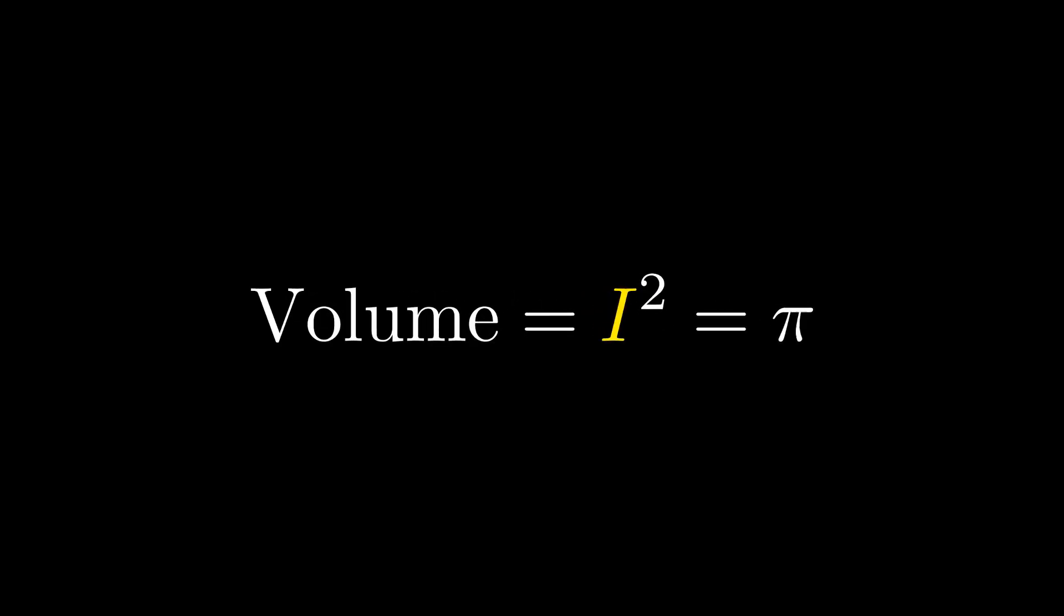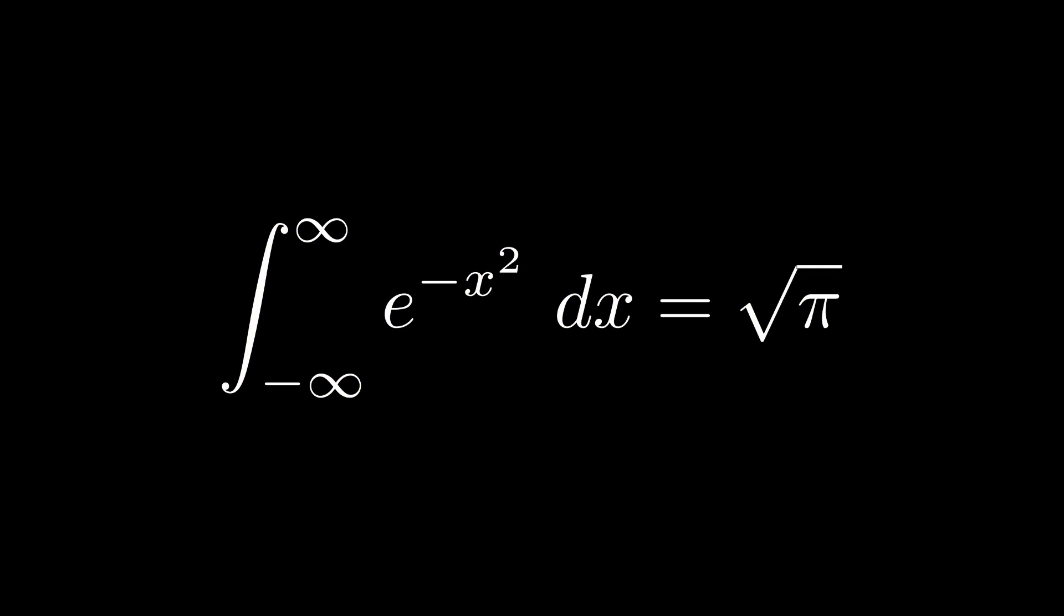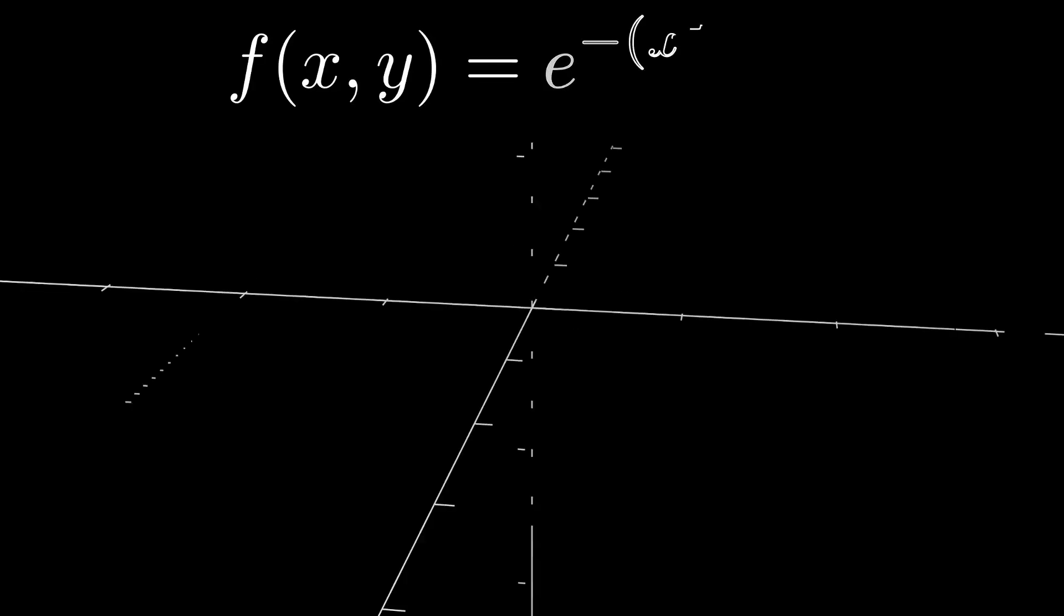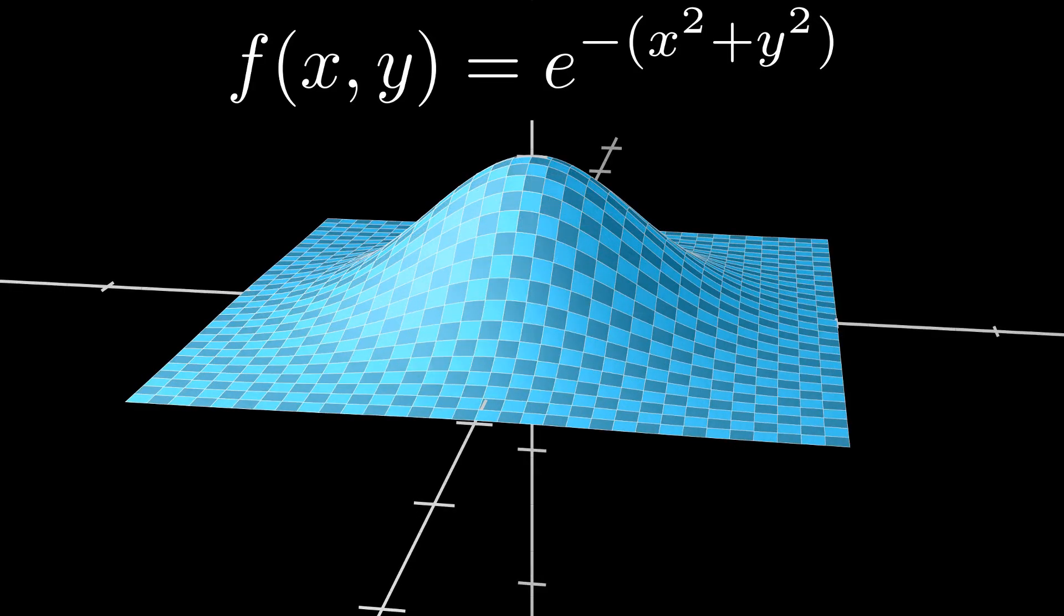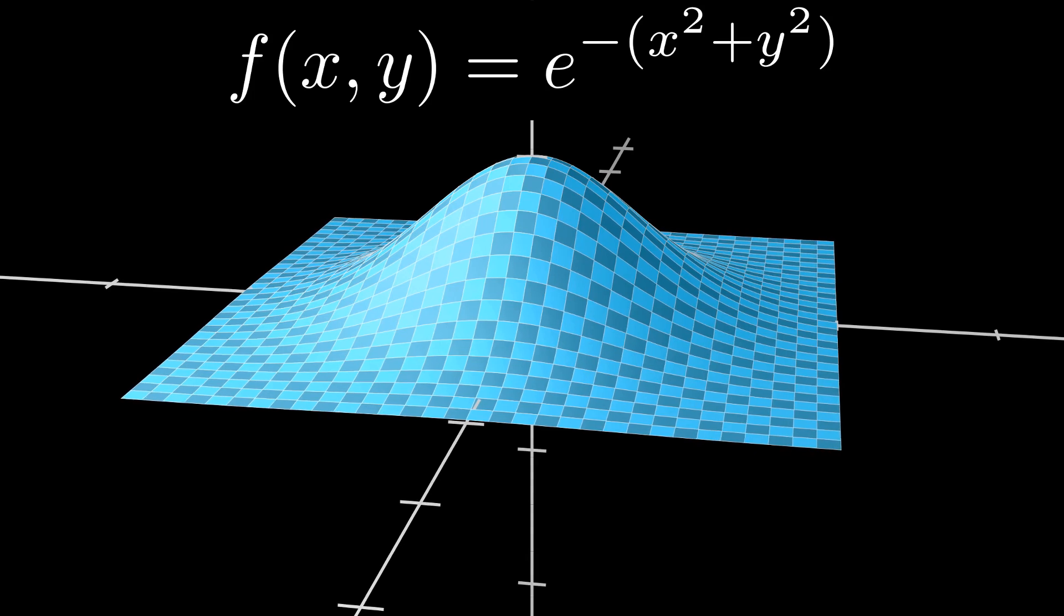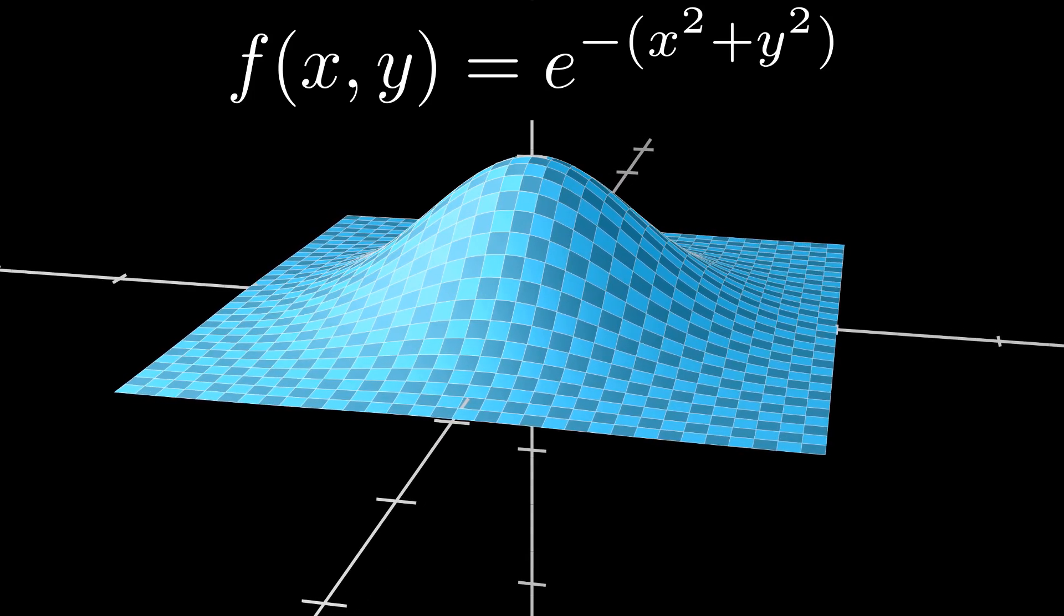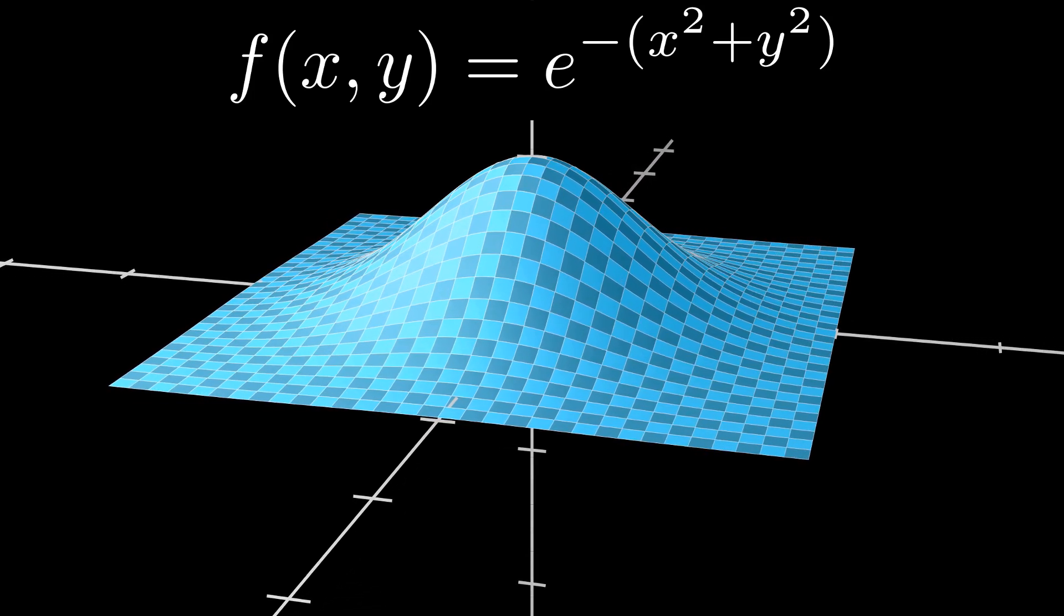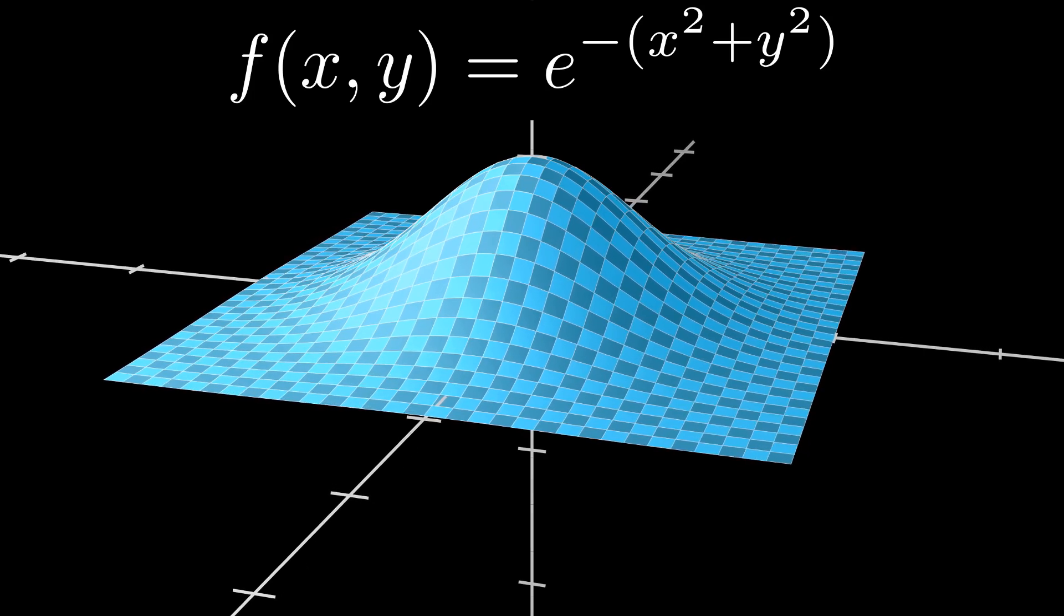So, i squared is equal to pi and i is the square root of pi. I hope you were able to see the hidden circle. Multiplying the function by itself in a new variable is the same as rotating the function. Rotation involves circles and circles involve pi.